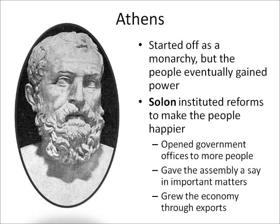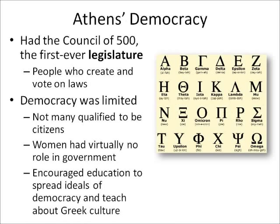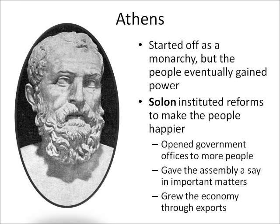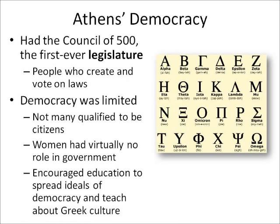Solon encouraged Greek exports to be sold all over the known world, which brought money back into Athens. Most importantly, Athens is known as the birthplace of democracy. There was a Council of 500 — a group of citizens — considered the first ever modern legislature, meaning a group of people who create and vote on laws. In the United States, that would be the Congress.